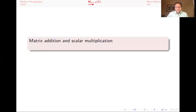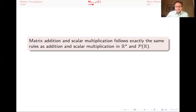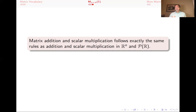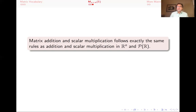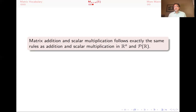Matrix addition and scalar multiplication follow exactly the same rules as addition and scalar multiplication in R^n and the space of polynomials P(R): addition is commutative, associative, there's a zero element, there are negatives, scalar multiplication distributes over addition, one times something is itself, and alpha times beta times something equals alpha times (beta times something). The zero matrix is the matrix of all zeros, and the negative of a matrix is obtained by multiplying every entry by negative one, giving a matrix that when added to the original yields the zero vector.